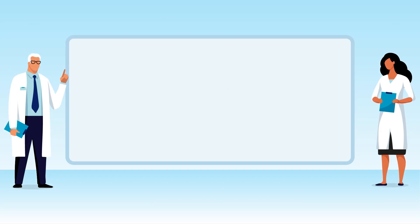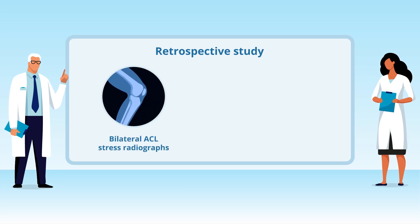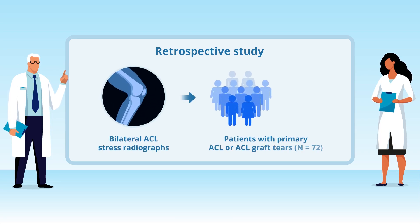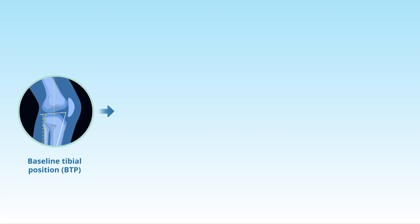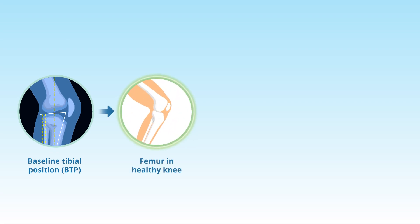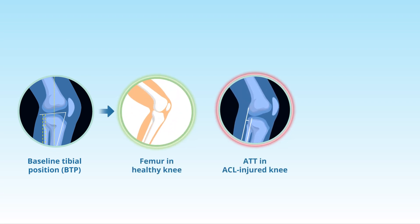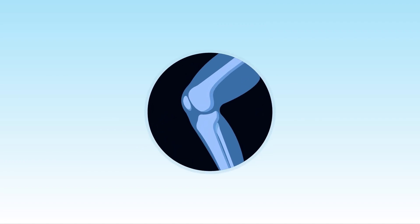To this end, researchers from the United States of America conducted a retrospective study to evaluate the bilateral ACL stress radiographs of 72 patients with primary ACL or ACL graft tears. They measured the baseline tibial position or BTB in relation to the femur in the healthy knee and ATT in the ACL-injured knee, and calculated side-to-side differences or SSD. In addition, they used the anatomic tibial axis to obtain PTSD measurements.